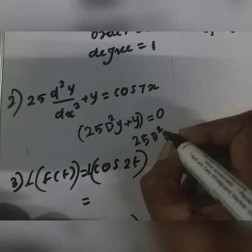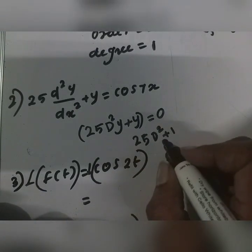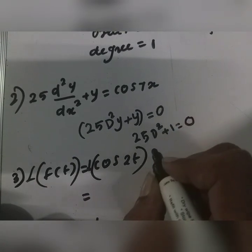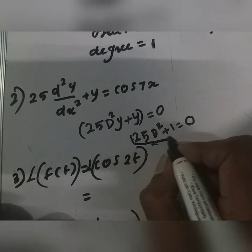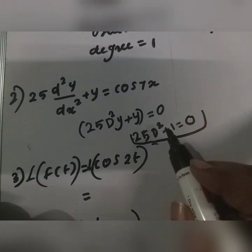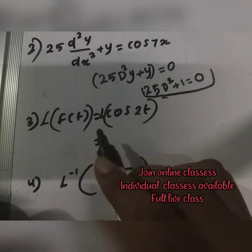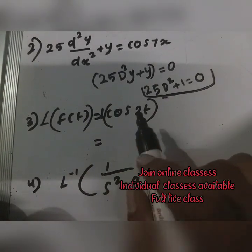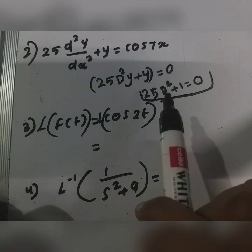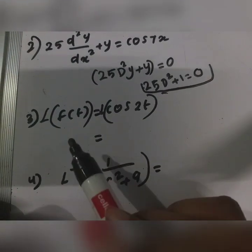So we have 25D squared plus 1, times y, equal to 0. This is a characteristic equation. We put m in place of D, where D squared represents d squared by dx squared.